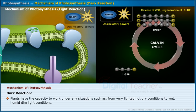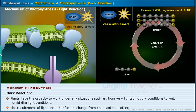Plants have the capacity to work under any situation, such as from very lighted, hot, dry conditions to wet, humid, dim light conditions. The requirement of light and other factors changes from one plant to another.